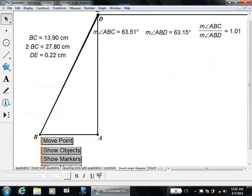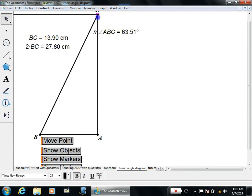The conchoid is useful for trisecting an angle. And here is a triangle with a 63 degree angle.